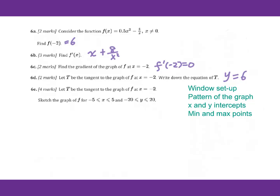Let's go to 6e. Let t be the tangent to the graph of f at x equals negative 2. Sketch the graph of f for x greater than or equal to negative 5 and less than or equal to 5, and y greater than or equal to negative 20 and less than or equal to 20.